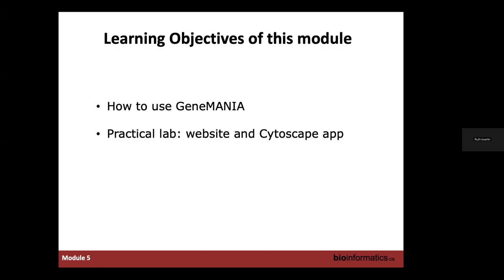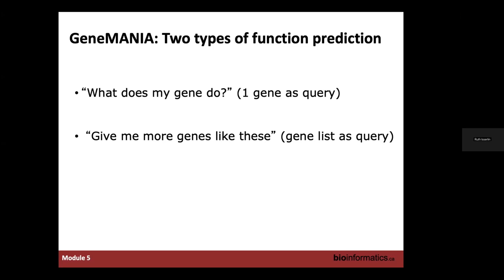GeneMANIA has two types of functional prediction and two questions you can try to answer. The first question is: I have a gene and I want to know what it does — it's a novel gene with no functional annotations and I want GeneMANIA to help find its function. The second question is: I have a gene list and I want to find more genes related to those genes — essentially, give me more genes like my gene.